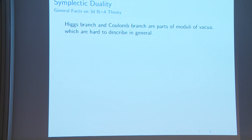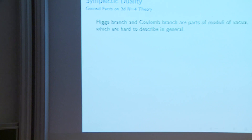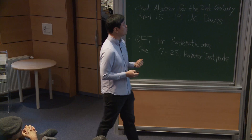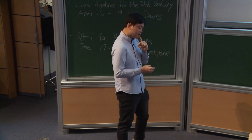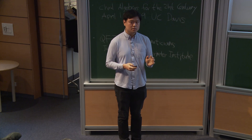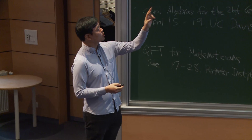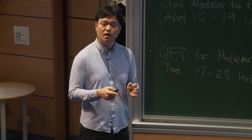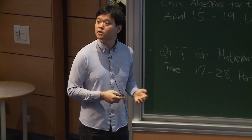Higgs and Coulomb branches are parts of what is called the moduli of vacua, which is hard to describe in general. Since our interest is ultimately algebraic, we can try to understand Higgs and Coulomb branches after some kind of twist — the relevant information should be accessible after twisting, and twisting makes things simpler.